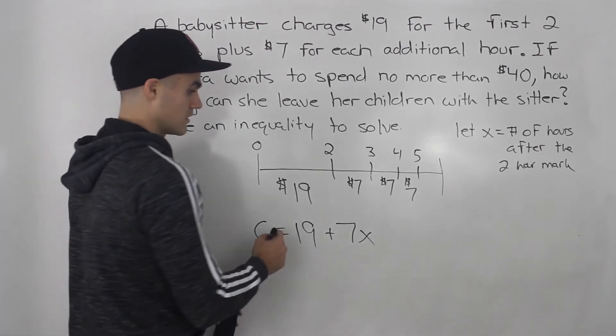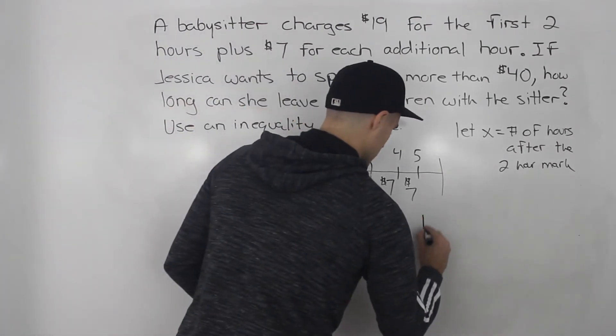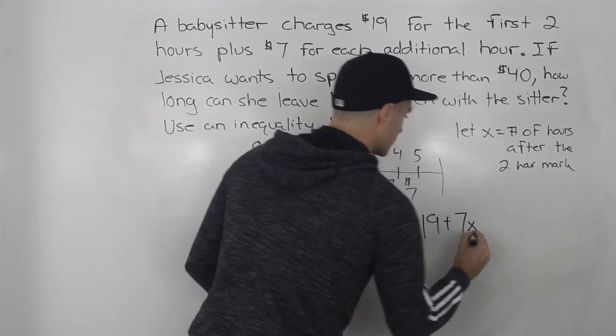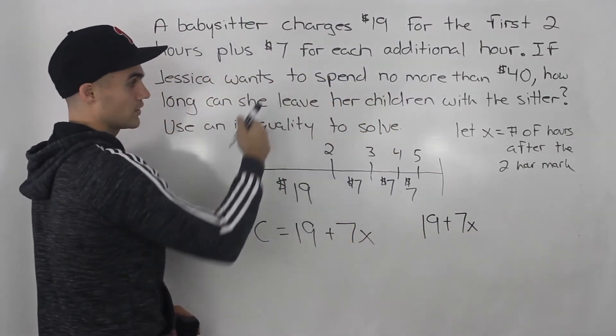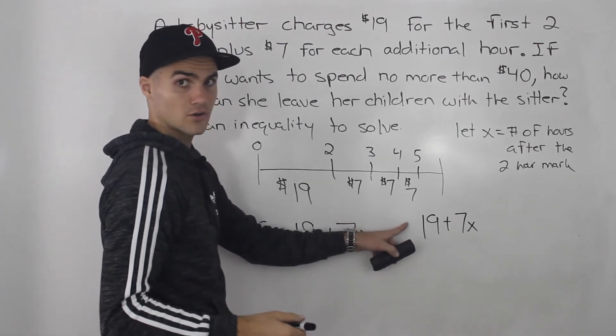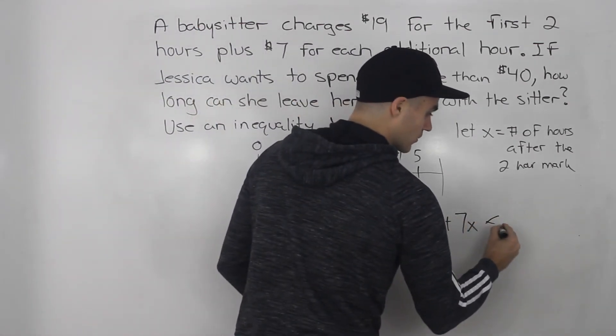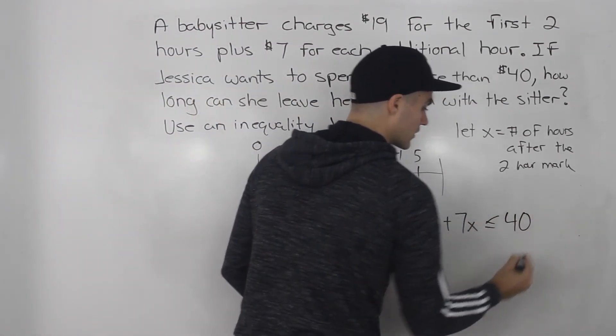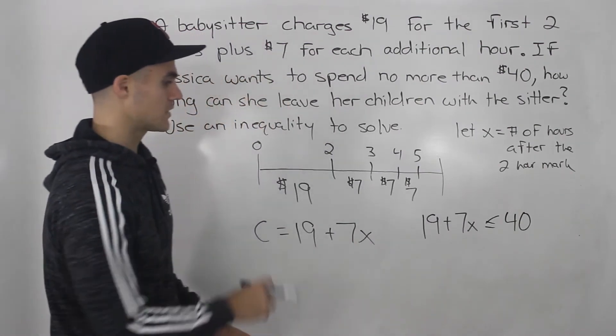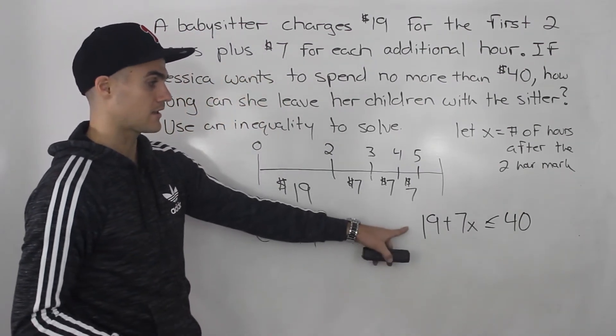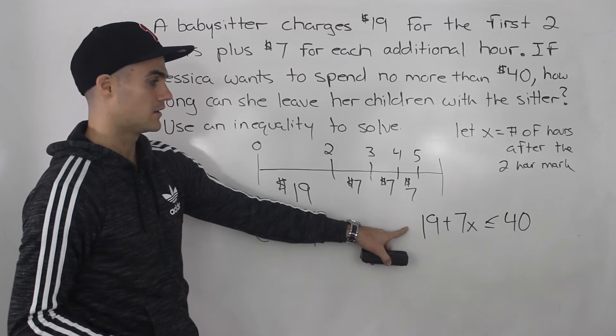Jessica doesn't want her charge to be more than 40, so the charge is less than or equal to 40. And that's how we can represent the situation in an inequality.